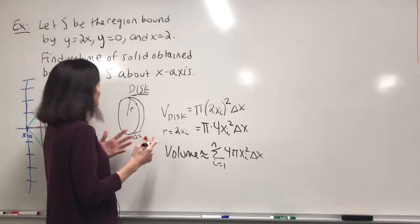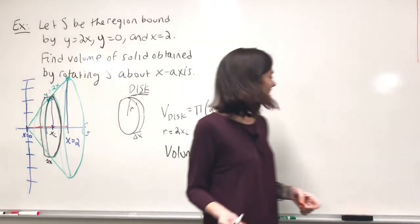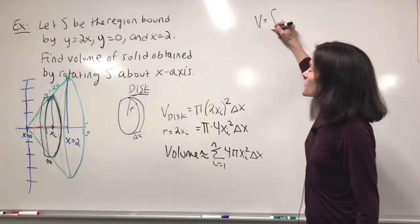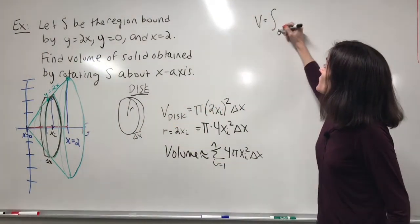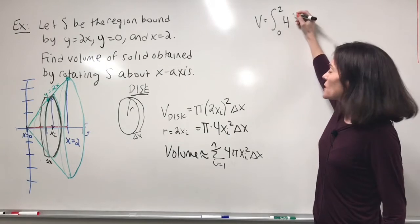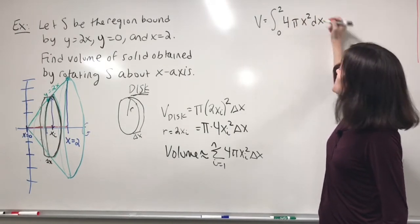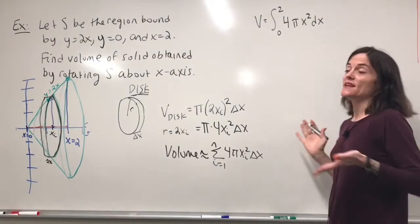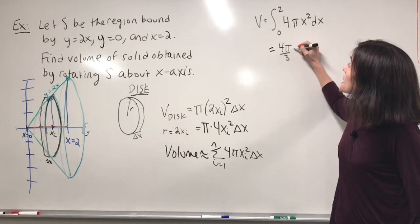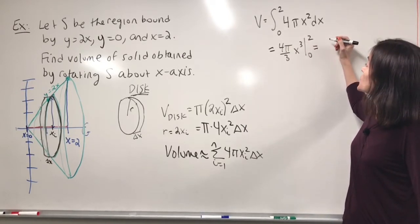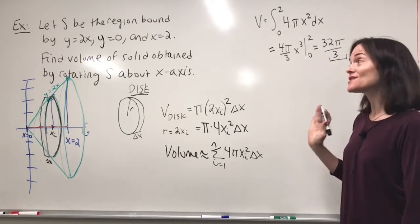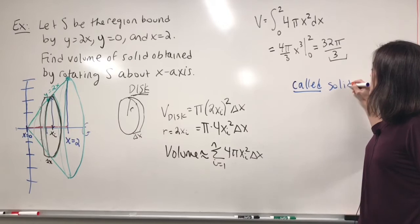What I really want to do is integrate, because it's much easier than a Riemann sum and it's exact. I know the volume is an integral. My x values range from 0 to 2, so the volume equals the integral from 0 to 2 of 4pi x² dx. That gives us 4pi over 3 times x³ evaluated between 0 and 2, which equals 32pi over 3. This is the volume of this solid.